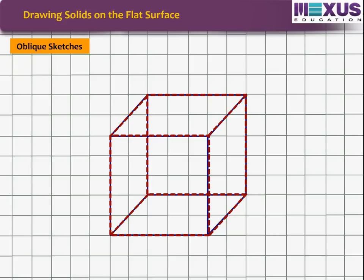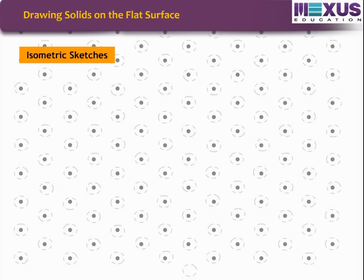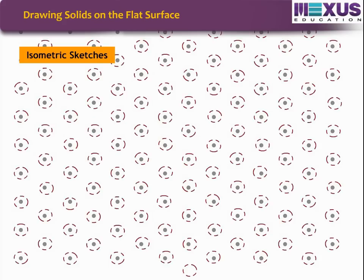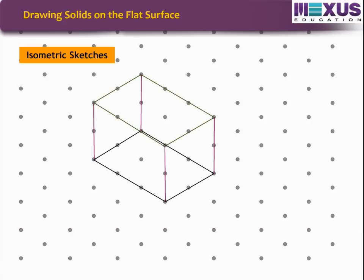Now let's learn about another technique to draw 3D shapes on plain surface. It is isometric sketches. To draw isometric sketches, we need an isometric sheet. An isometric sheet divides a screen into small equilateral triangles made of dots. Using isometric sheet, the sketches can be drawn with measurements that agree with that of a given solid.